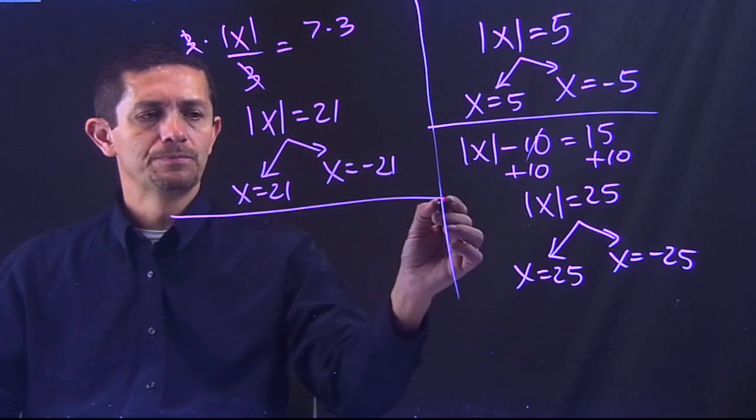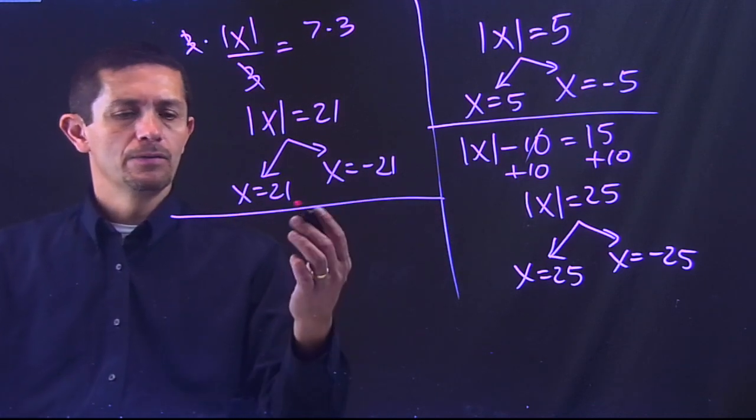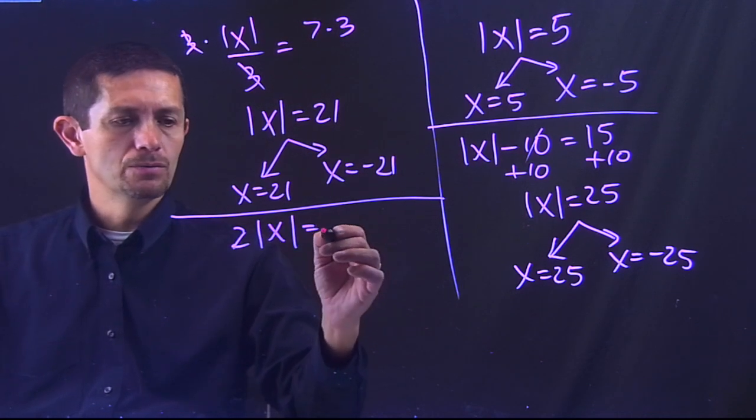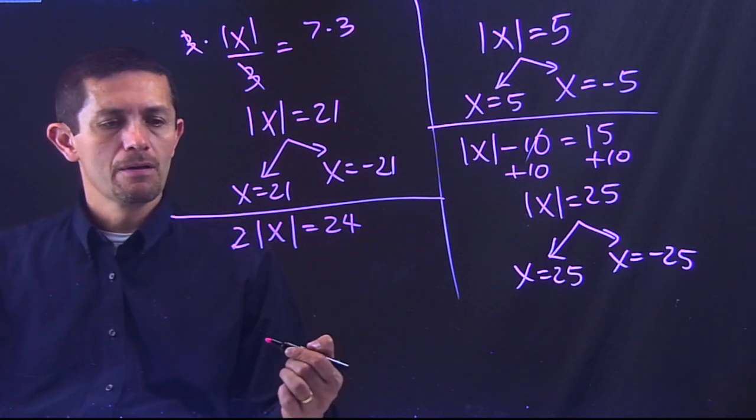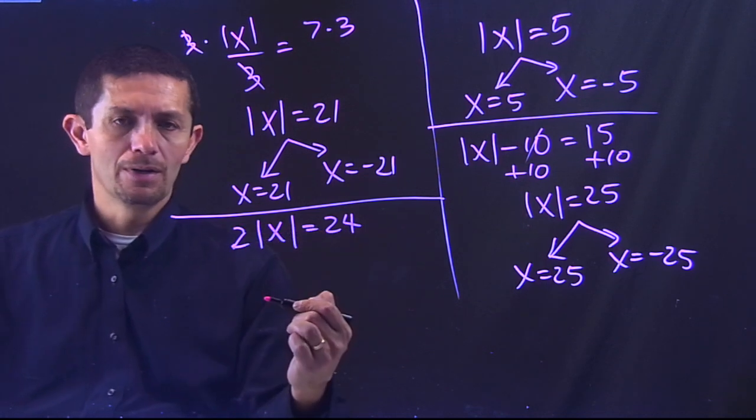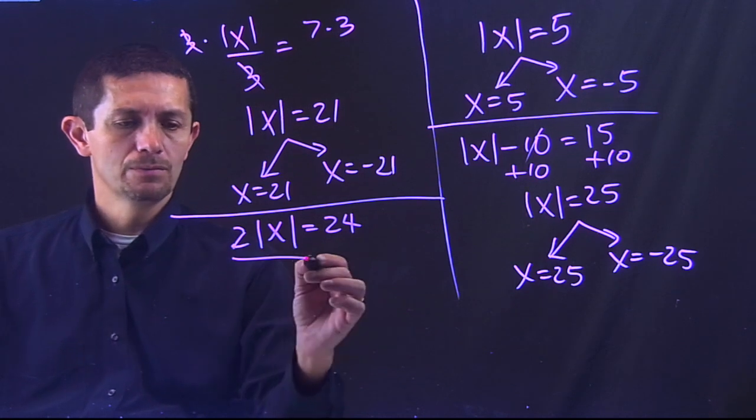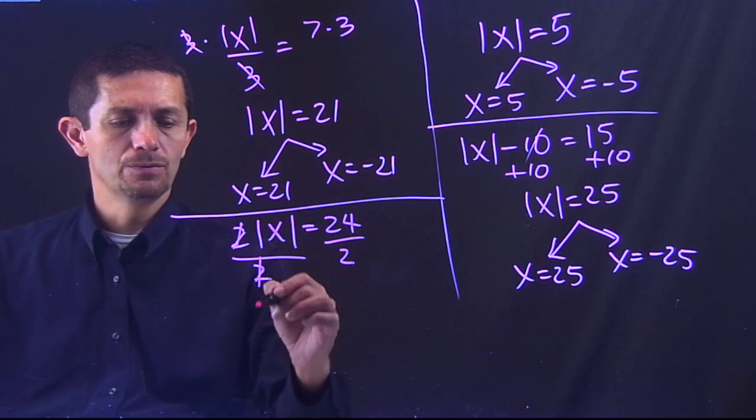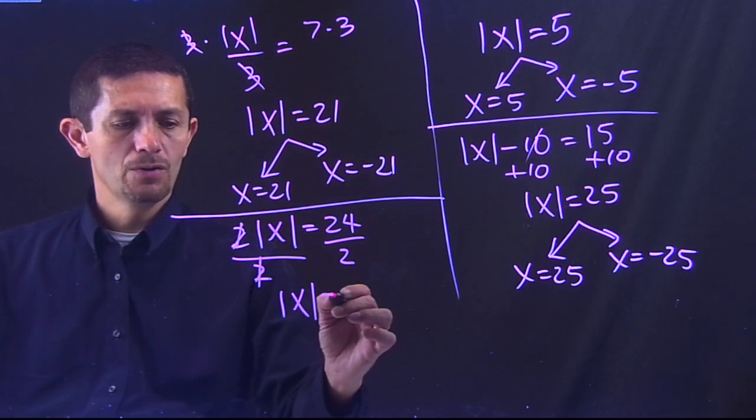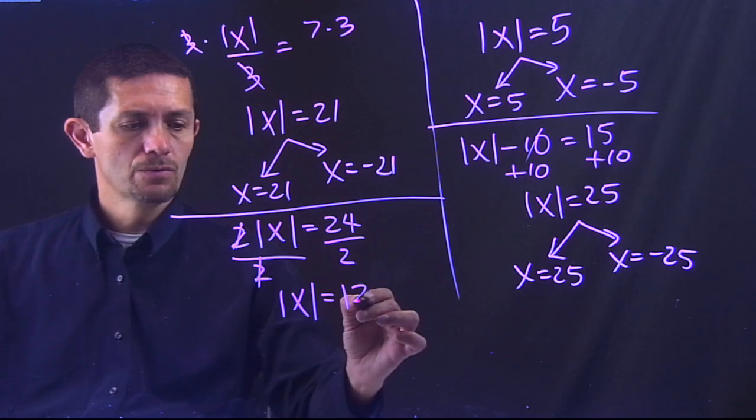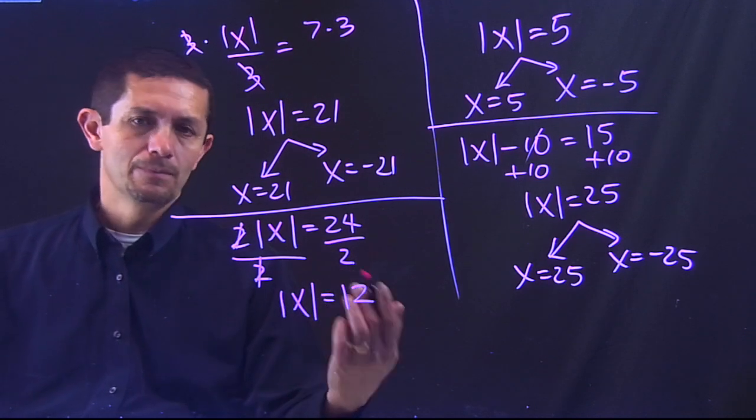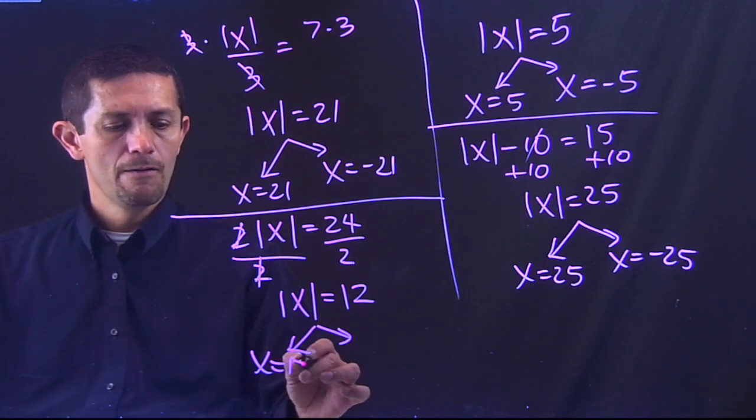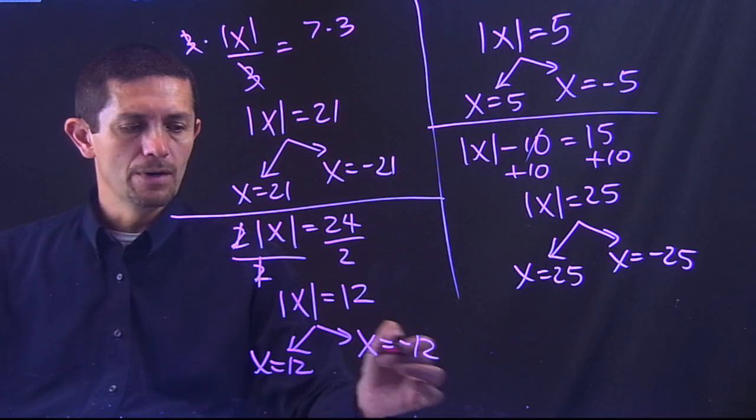Let's do one with multiplication. Let's pretend that I have two absolute value of x equals 24. Now, this two is multiplying the absolute value. Therefore, I have two divided by two, divided by two. This two divided by two cancels out, and you have absolute value of x equals to 12. The absolute value is by itself, so break it into two different answers. One positive and one negative.